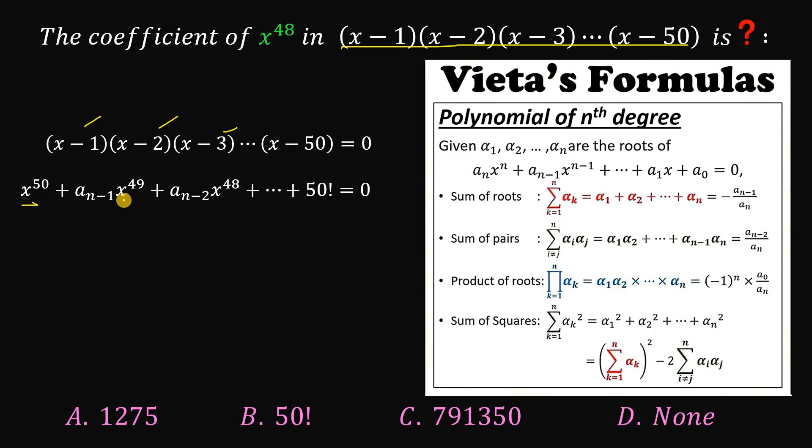So A sub n minus 1 times x raised to the power of 49, which is the sum of the roots of this equation, plus A sub n minus 2 times x raised to the power of 48, all the way down to the product of the roots, which is 50 factorial.